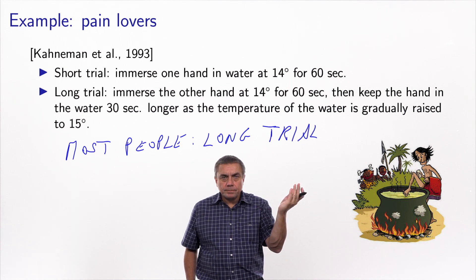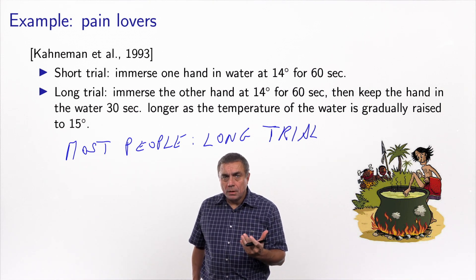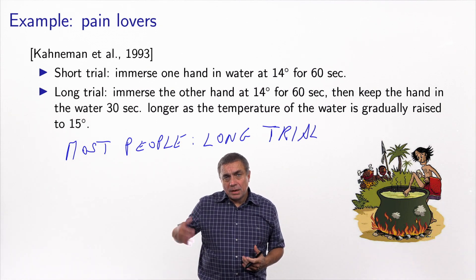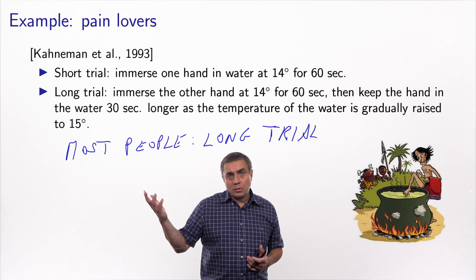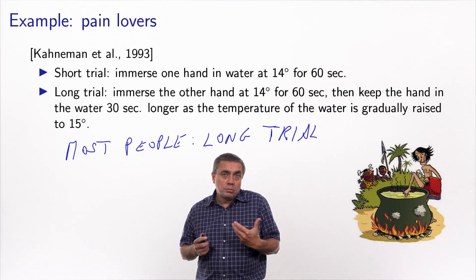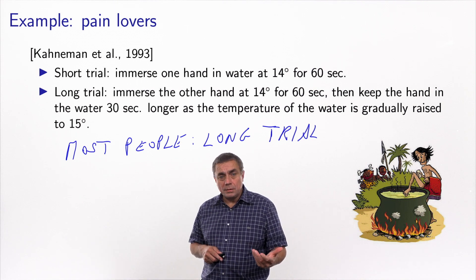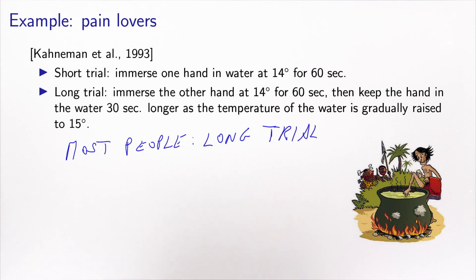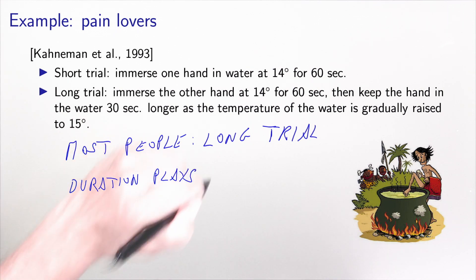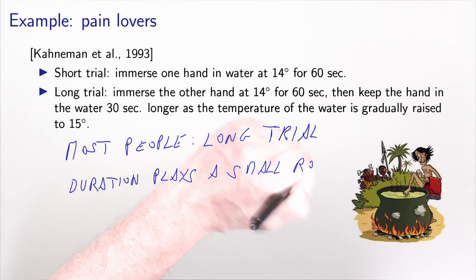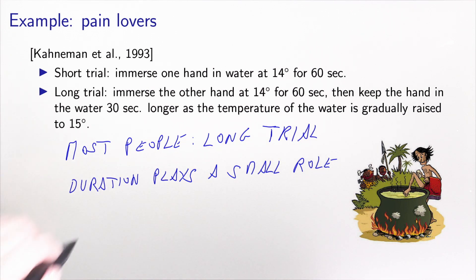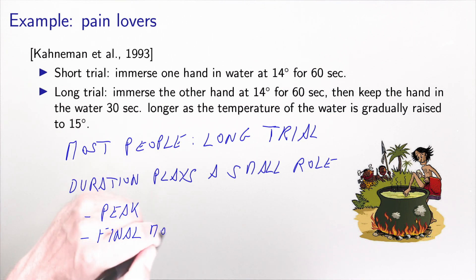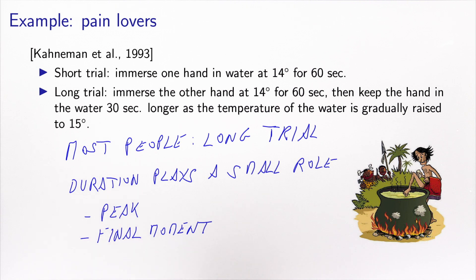If you write a utility function based on duration, on the one hand you have a trial with 60 seconds, and another one with 90 seconds, and people prefer the long trial. This means you would deduce that the beta coefficient is positive — the longer you keep your hand in cold water, the happier you are. This looks counterintuitive and irrational, but it's just apparent irrationality. The reason is that duration plays a very small role in perception. What matters is the peak and the final moment. In this case, the peak is the same for both trials — 14 degrees for 60 seconds — but the final moment differs, as the long trial ends a little bit warmer.